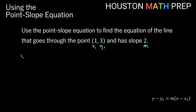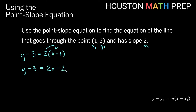We'll go ahead and plug those into our formula. y minus y1 on the left would be y minus 3, equals m, so m will be 2 here, times the quantity x minus x1. x minus x1 will be x minus 1 because our x1 is 1. We'll go ahead and distribute that, so we'll get y minus 3 is equal to 2x minus 2 once we distribute our 2 on the right. Then to get rid of the minus 3 and solve for y, we'll add 3 to both sides, and once we do that we'll get y by itself.